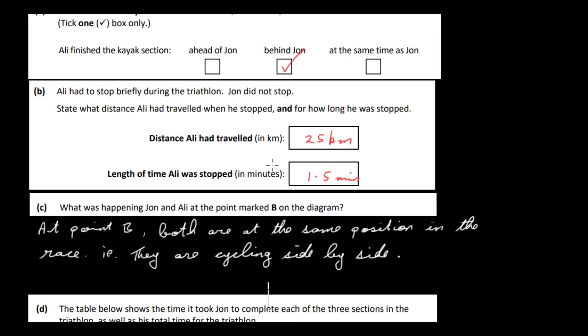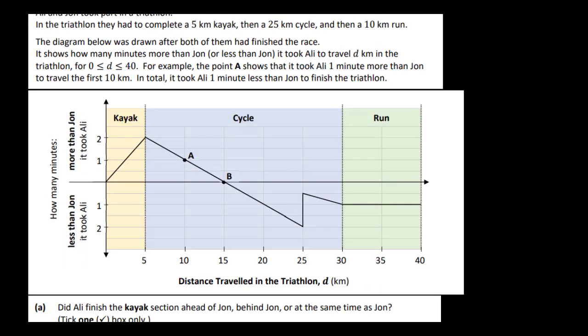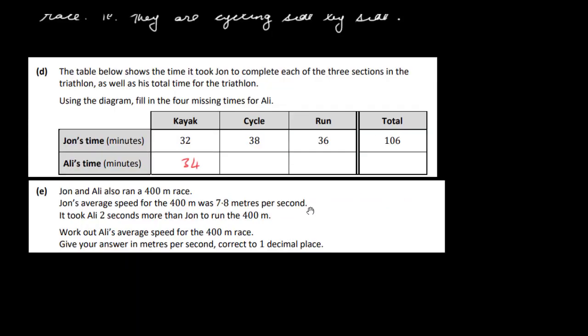Now let's have a look at the cycle then. So if we look at the cycle, we can see that Ali is two minutes behind John, but finishes the cycle one minute ahead. That means Ali must have cycled three minutes faster over this section than John. Going from two minutes behind to one minute ahead, that's three minutes in total faster than John. So that would just give us 35 here.